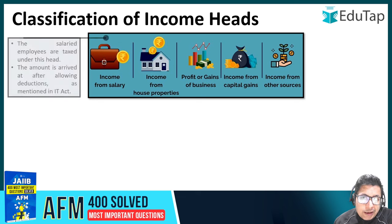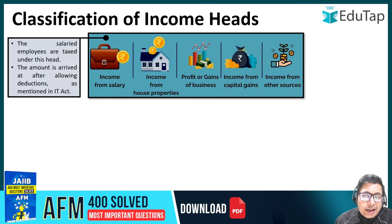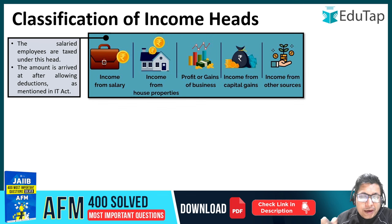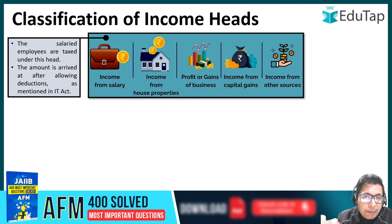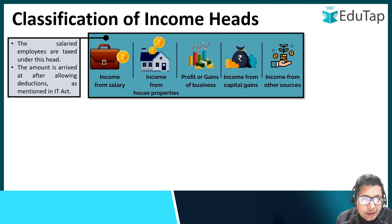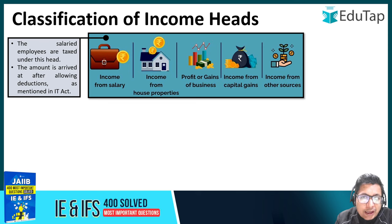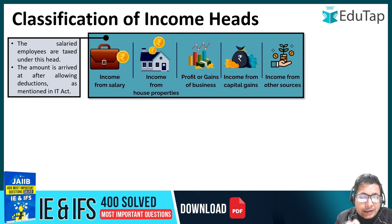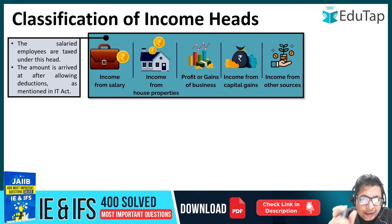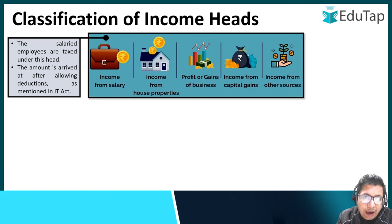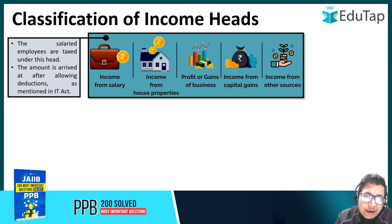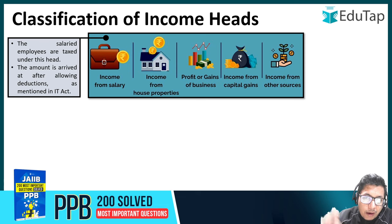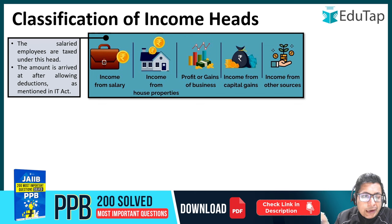First of all, income from salary — this is obviously the salary income that you are getting from whatever employment you are involved in. Jo bhi aap kaam karte hain, aapka employer aapko salary deta hai. Us salary ke saath, woh aapka TDS bhi deduct karta hai aapki salary mein se. And this TDS is then deposited with the government as a tax on behalf of yourself — aapke behalf pe yeh tax aapka deductor ya aapka employer government ko pay karta hai.